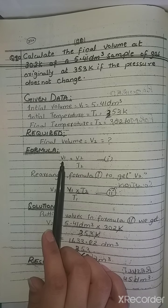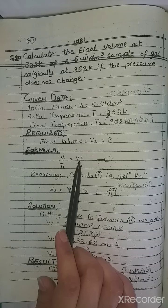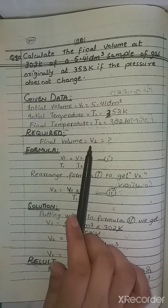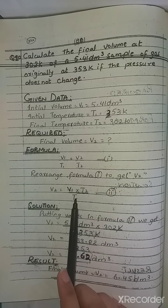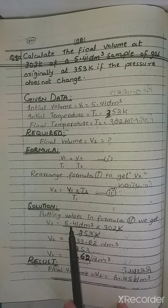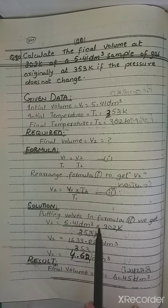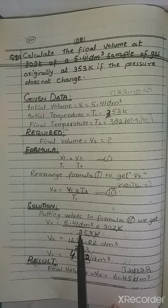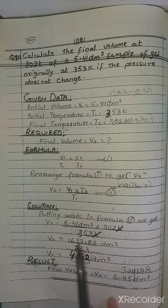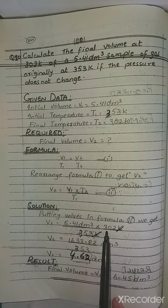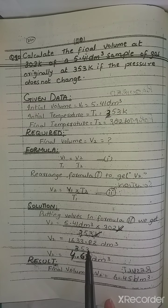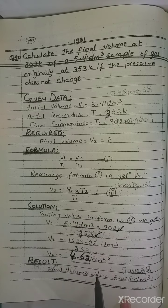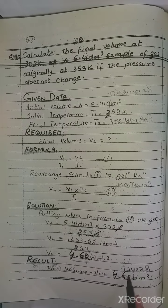According to Charles's Law, V1/T1 = V2/T2. Rearranging to find V2: V2 = V1 × T2 / T1. Putting in values: V1 = 5.41 dm³, T2 = 302 K, T1 = 353 K. Calculating: 5.41 × 302 = 1633.82 dm³, divided by 353 gives V2 = 4.62 decimetre cube. So the final volume is 4.62 decimetre cube.